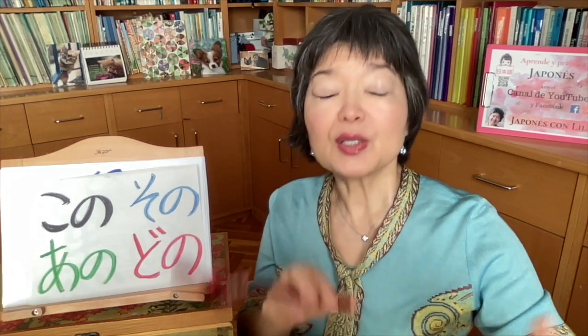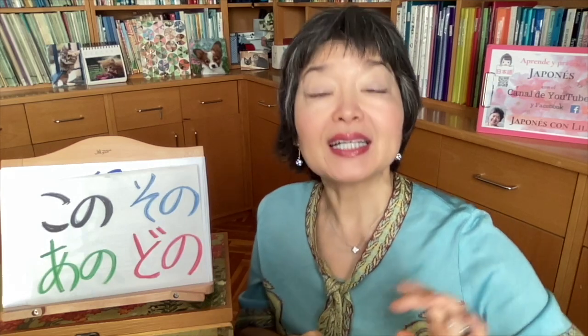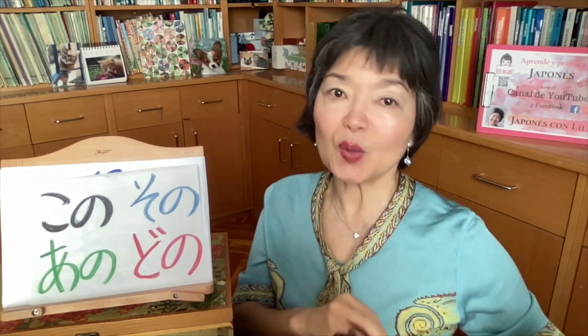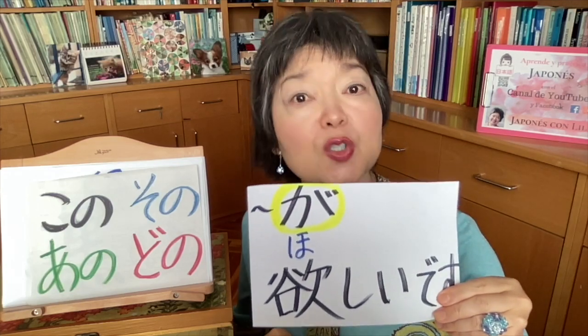Now imagine there are several pairs of shoes — black ones, brown ones, red ones. You can ask: どの靴 が ほしいですか (dono kutsu ga hoshii desu ka) — 'Which shoes do you want?' どの (dono) means 'which.' Remember この (this), その (that near you), あの (that over there), どの (which) — after all of these you must put a noun. So どの + 靴 = どの靴.